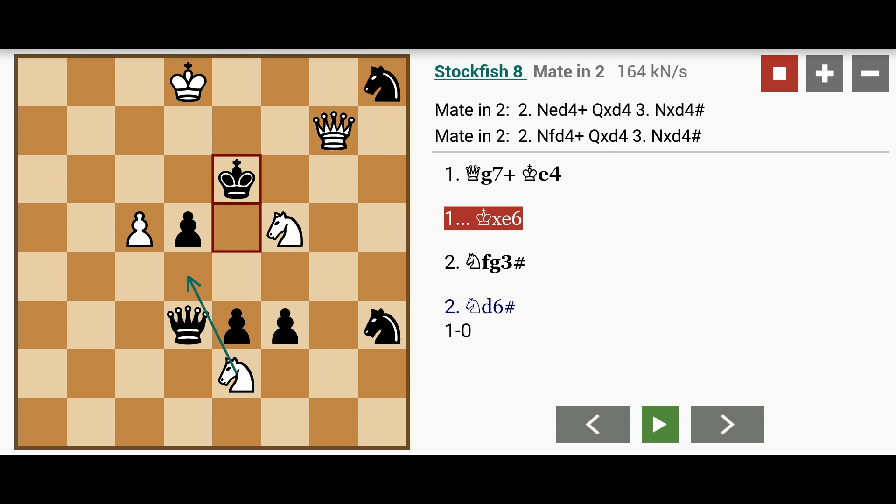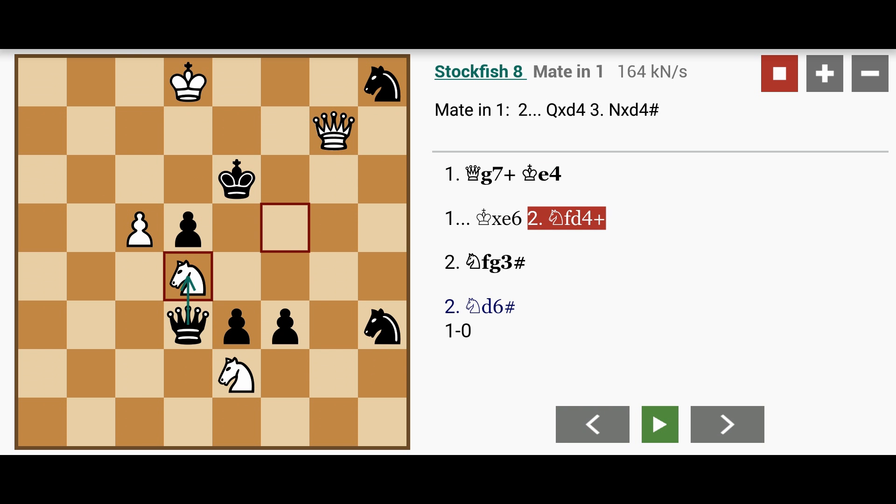White could play either knight moving to d4 check. Another piece sacrifice. The queen must capture.